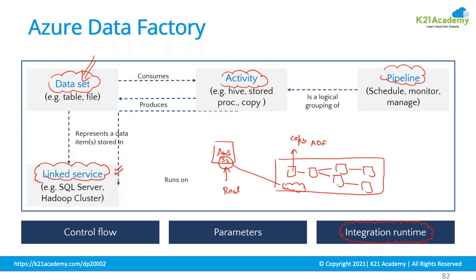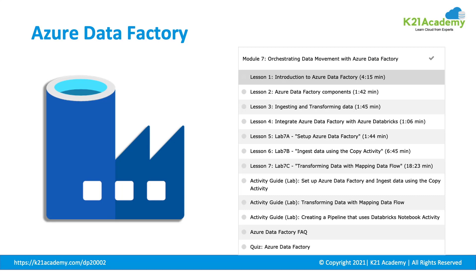Control flow means you might have control structures — maybe if-then-else statements, where if one thing happens then another should happen. All of those are part of Data Factory's offerings.